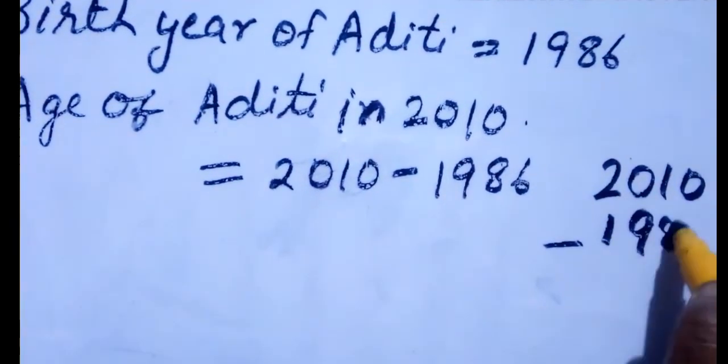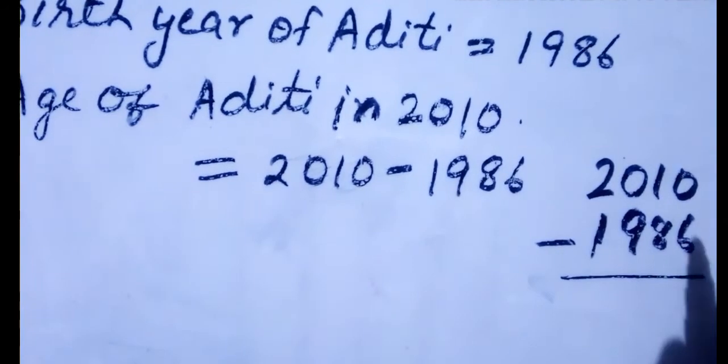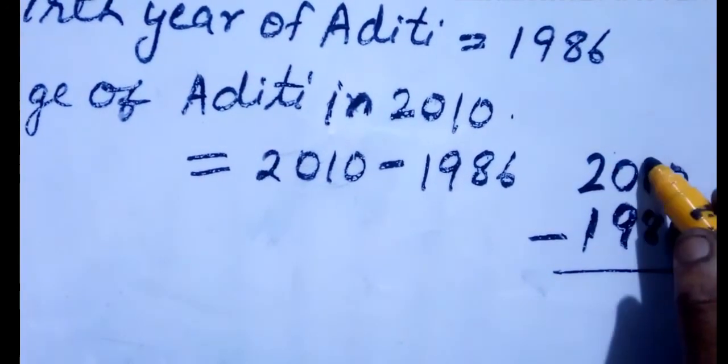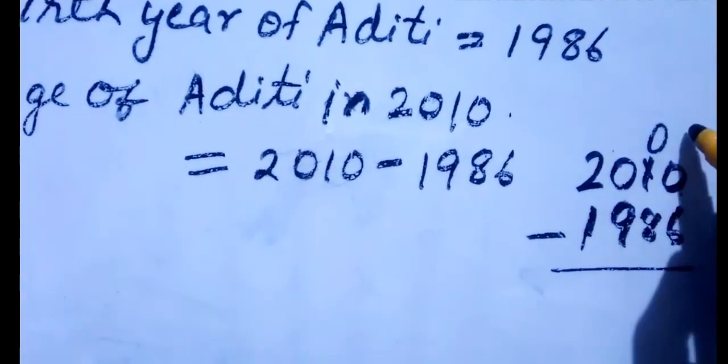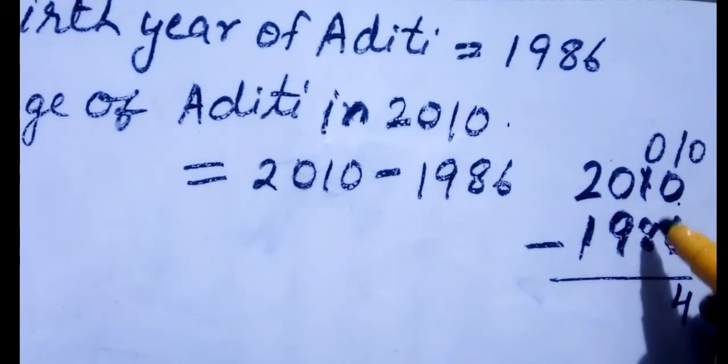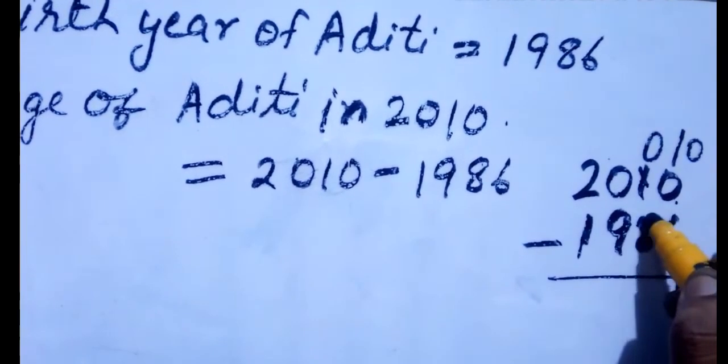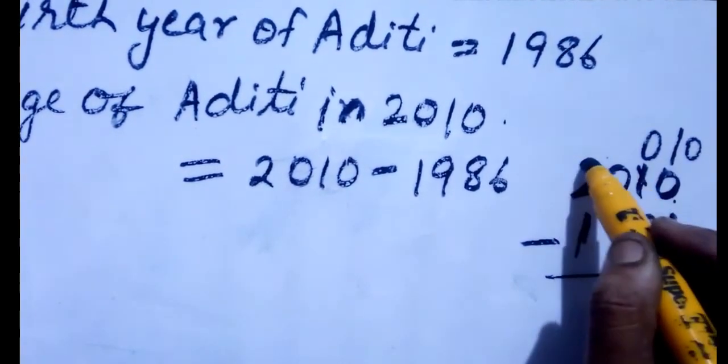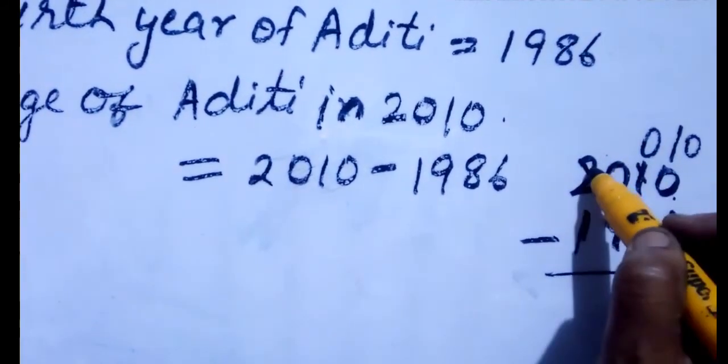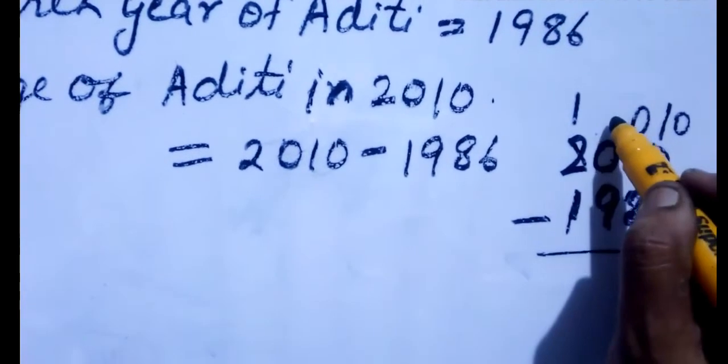Subtracting 2010 minus 1986: you cannot subtract 6 from 0, so carry 1 — the tens digit becomes 0 and ones becomes 10. 10 minus 6 is 4. You cannot subtract 8 from 0, carry from 2 — it becomes 1 and 0 becomes 10; carry again to get 9 and 10. 10 minus 8 is 2. 9 minus 9 is 0. 1 minus 1 is 0. So the age of Aditi in 2010 is 24.